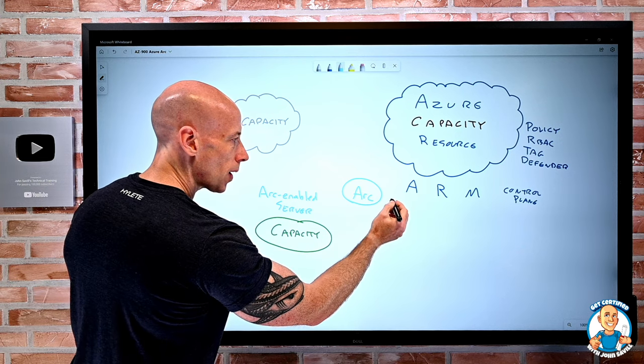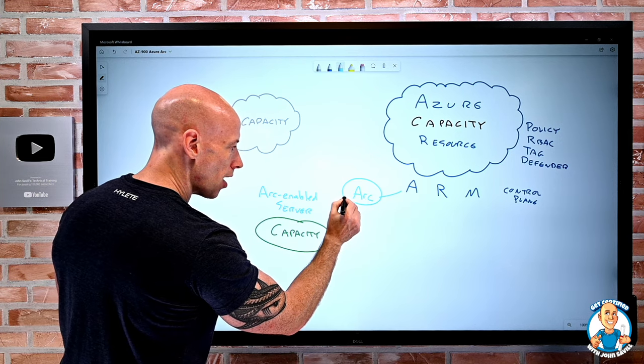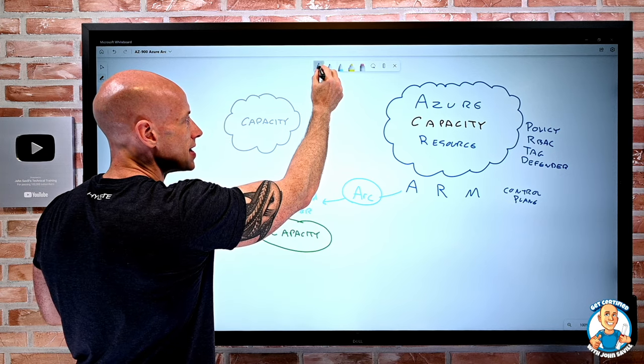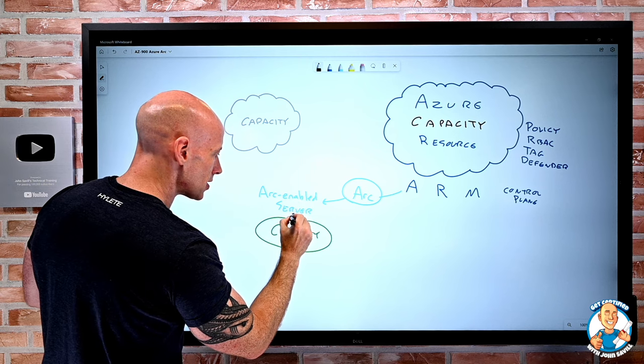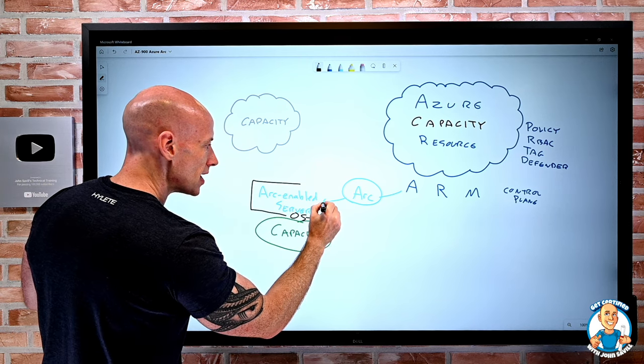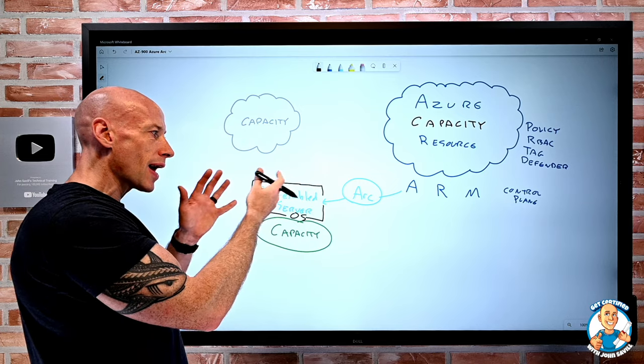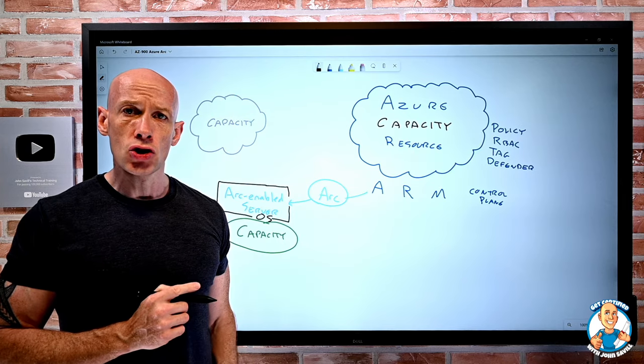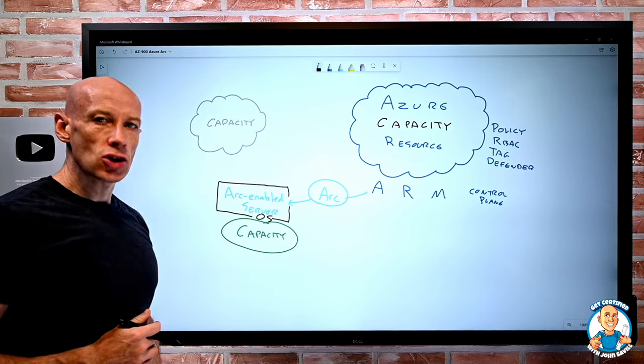I have an agent running inside there and then once I have this agent, this control plane of Azure via Arc is now extended to whatever that is. So I have some OS instance that now is Arc-enabled through that agent.